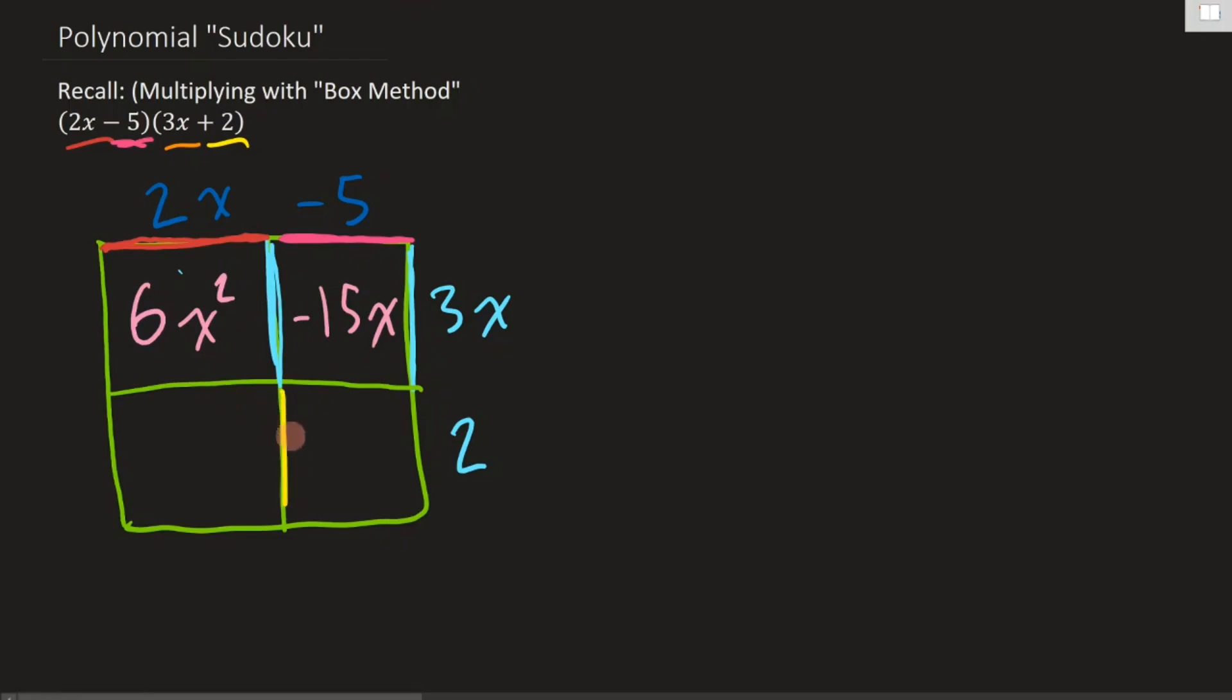These edges down here are both going to be 2s. This is 2. This edge across here is 2x. So 2 times 2x is 4x. And then finally, this edge here is negative 5. Negative 5 times 2 is negative 10.